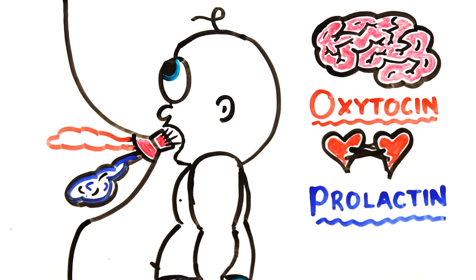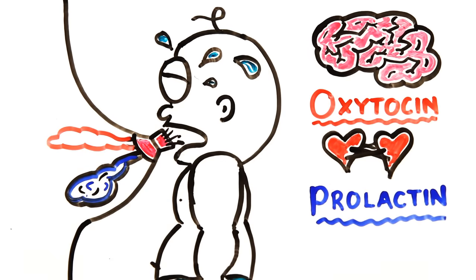The hormone prolactin is essential in making milk. This whole hormonal process can be triggered after only hearing a baby cry, even if it isn't your baby.